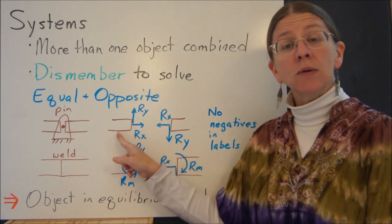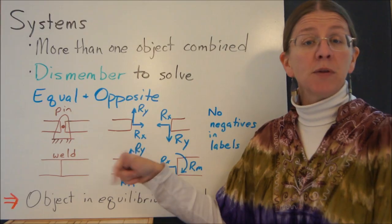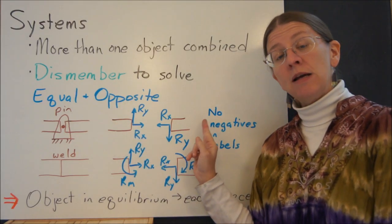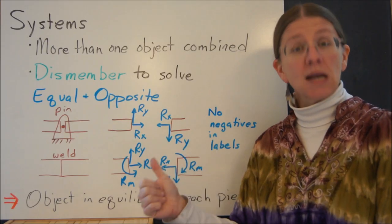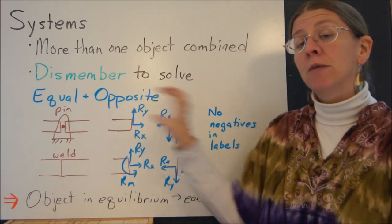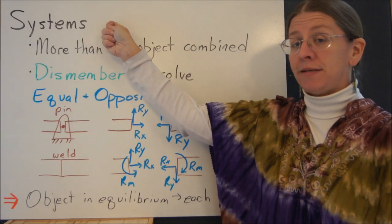So whatever equations of equilibrium you can write here, say for example the sum of the forces in x, sum of the forces in y, and the sum of the moments, I can also write over here for the sum of the forces in x, the sum of the forces in y, and the sum of the moments. So I will have equations of equilibrium for both of the objects in my system.